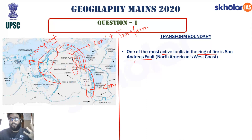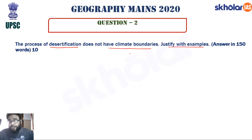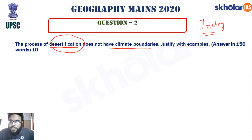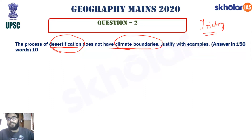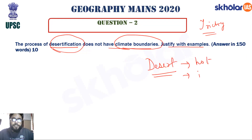The next question: 'The process of desertification does not have climatic boundaries — justify with examples.' This is a moderately difficult and slightly tricky question. Before explaining desertification, you must first understand what a desert is.